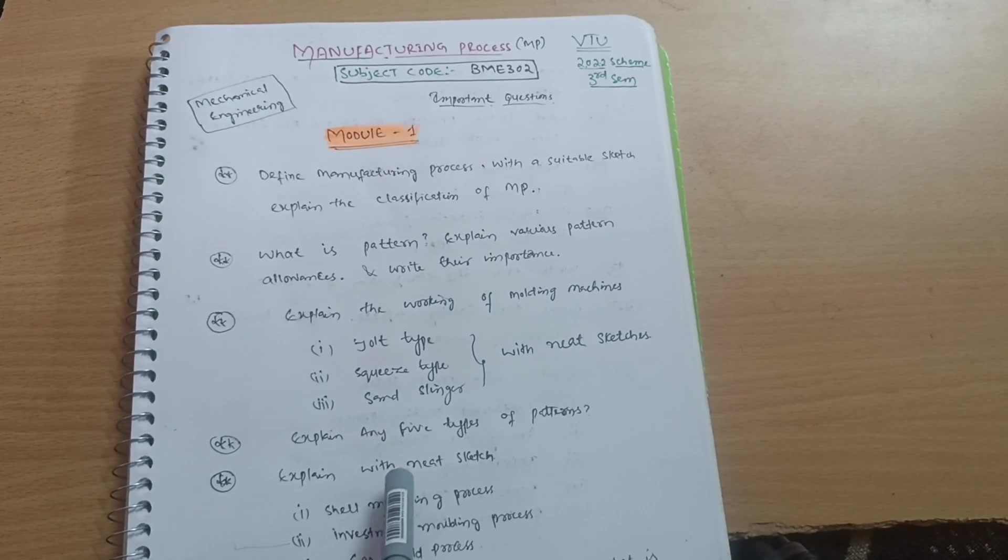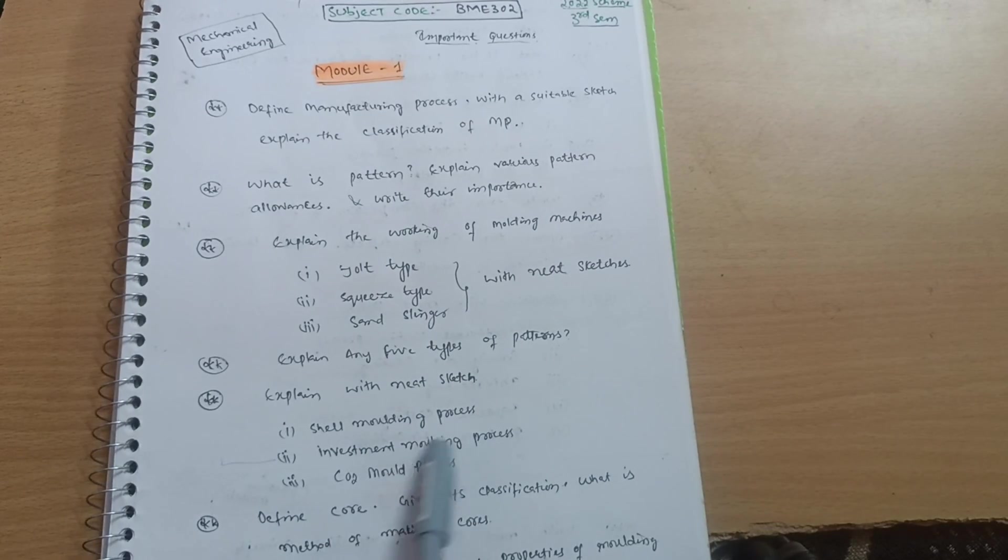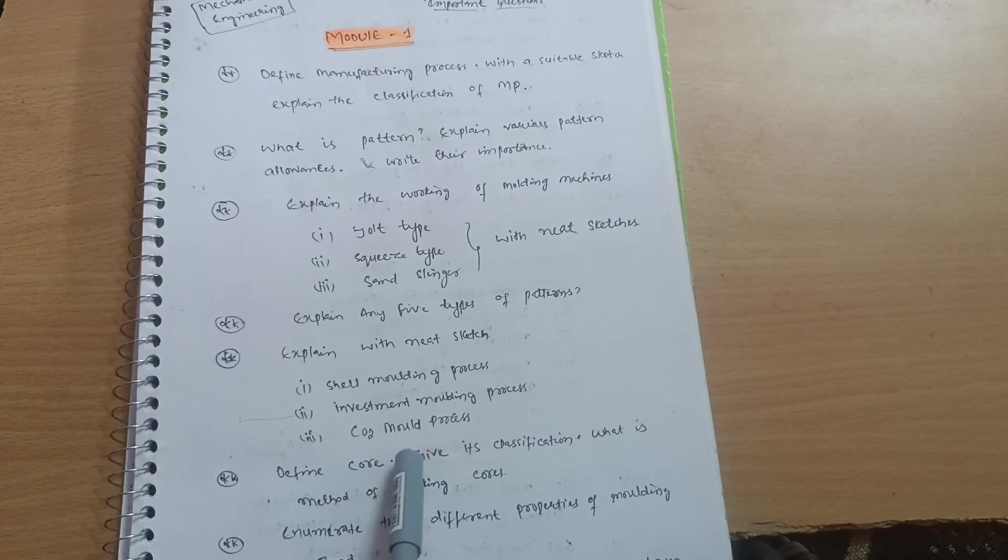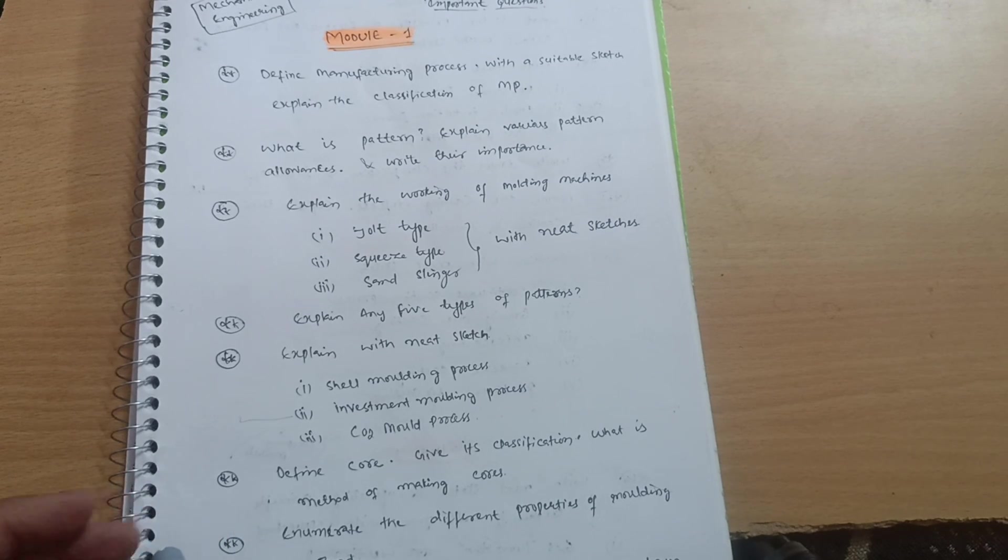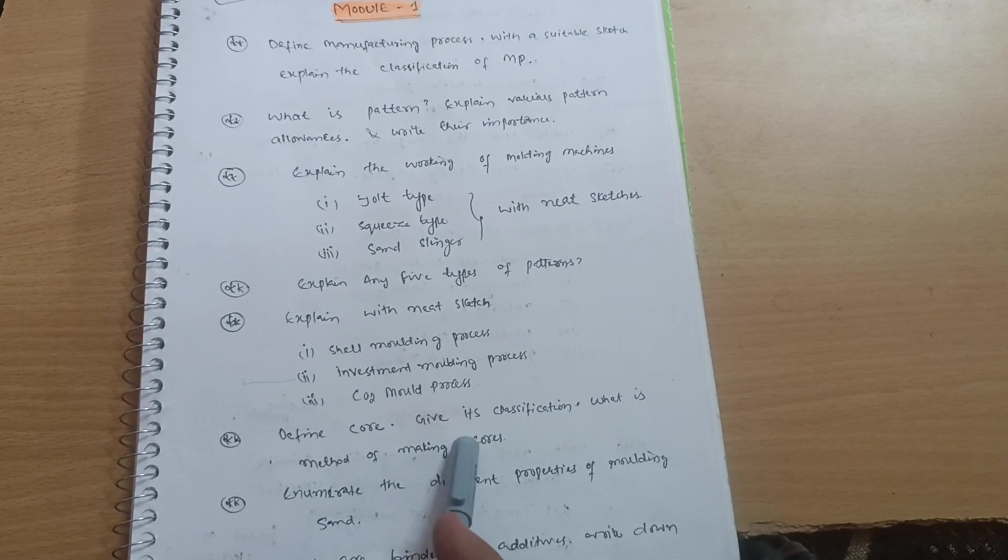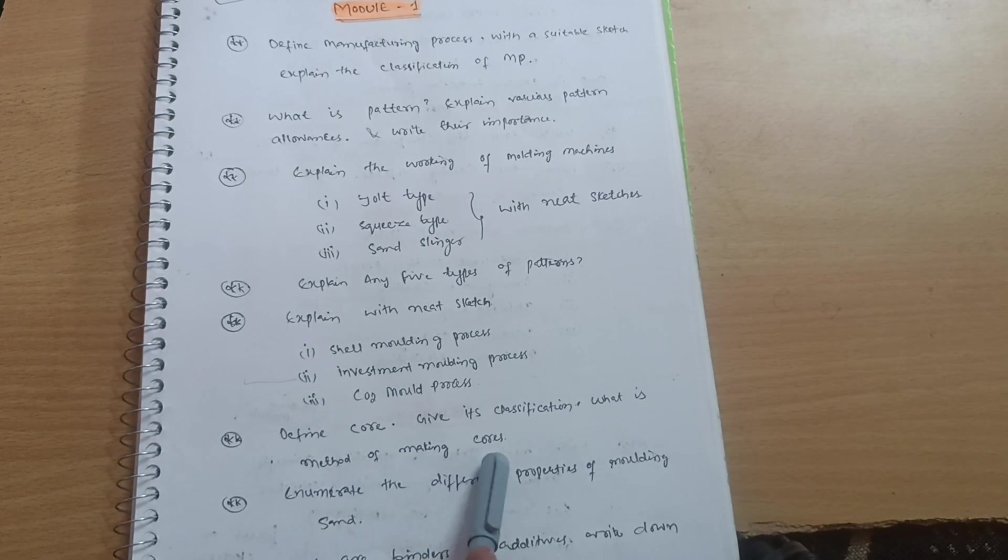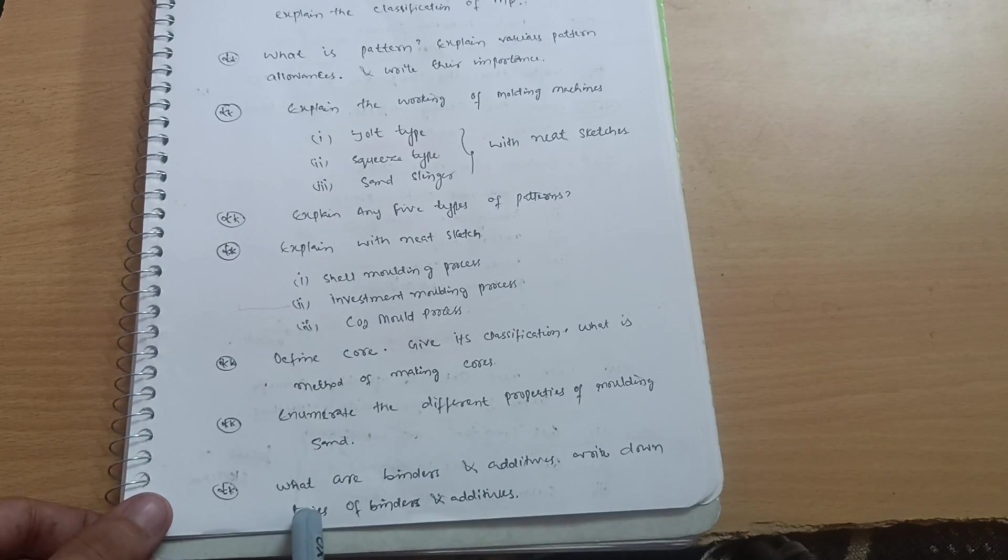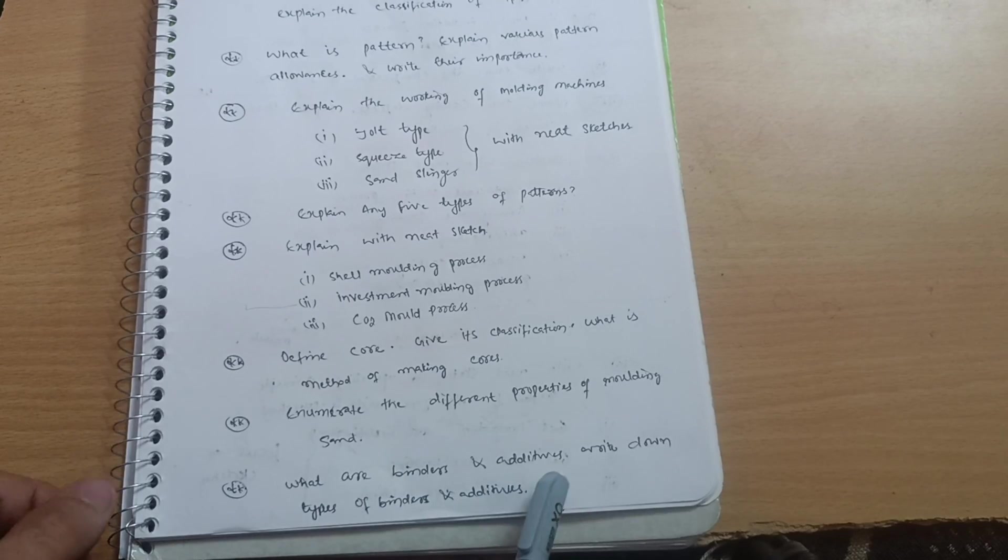Explain any five types of patterns. Explain with neat sketch shell molding process, investment molding process, CO2 mold process. There are a lot of processes but it is not possible to cover all the syllabus. As already in the previous video I mentioned, nobody can cover all the syllabus as far as examinations are concerned. Next is define core, give its classification, what is method of making cores, enumerate the different properties of molding sand. And last question, what are binders and additives? Write down types of binders and additives. This is all about Module 1.